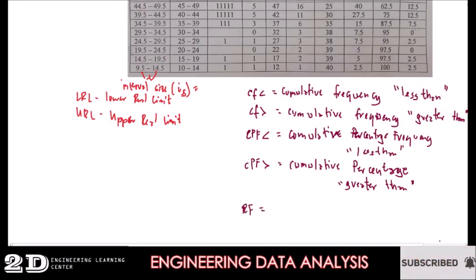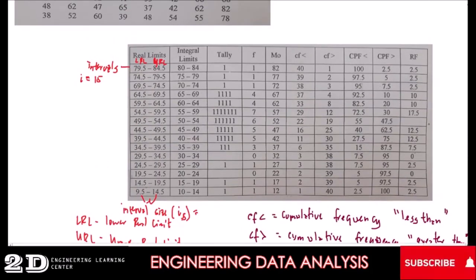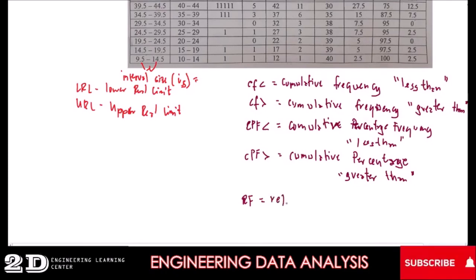For the RF, you select the most likely middle interval, then get the difference of the cumulative percentage frequency greater than for that interval — for example, 47 minus 30 equals 17. The relative frequency describes how the middle, or the so-called median, is distant from the other frequencies.